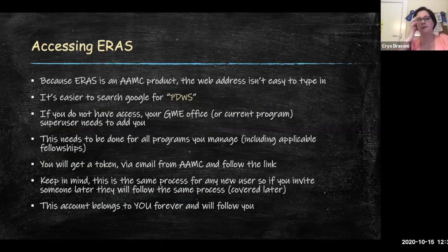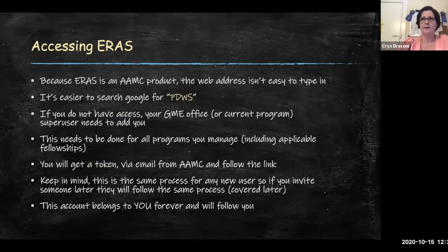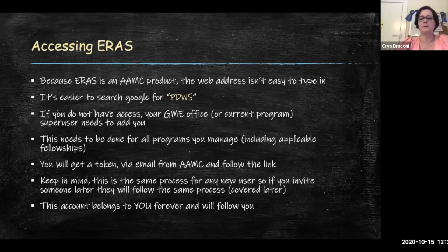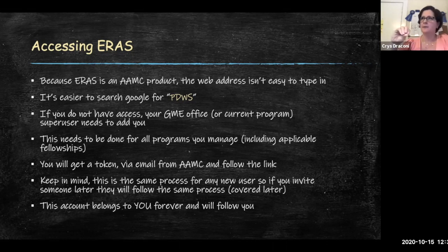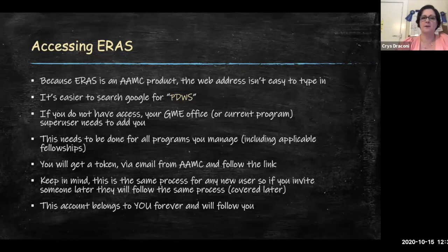Because ERAS is an AAMC product, the web address is not easy to type — it's not like acgme.org where you find it quickly. You can't type ERAS.org or PDWS.org and find it. The AAMC is actually associated with the AMA, so the website is something like www.ama-assn.org with a backslash — and I never remember the rest even after logging in for many years. The best way is just to go to Google, type PDWS, and you will find it.